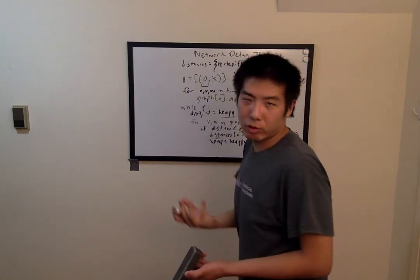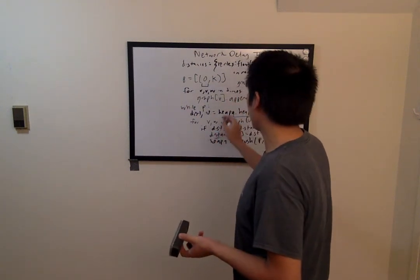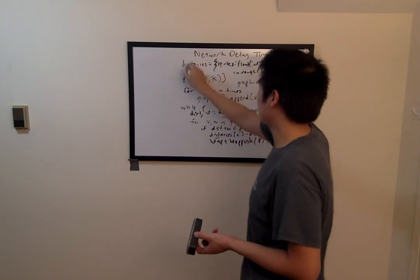we will have created the shortest path dictionary that we're looking for, and it will be stored in the variable distances.